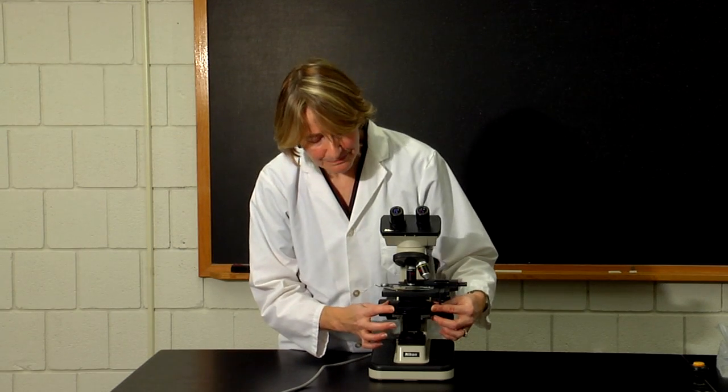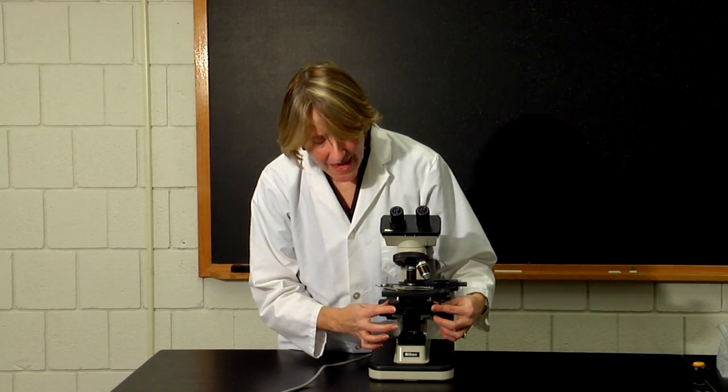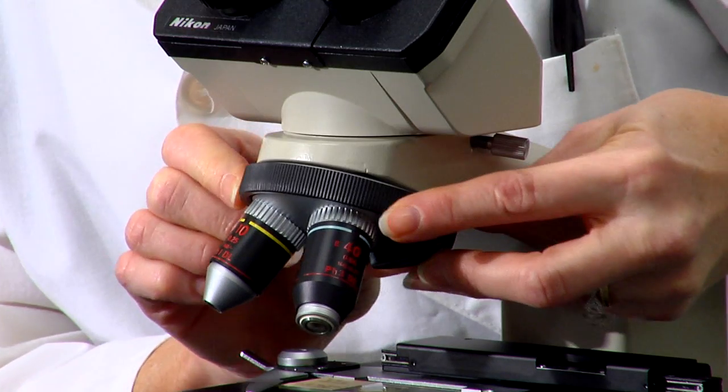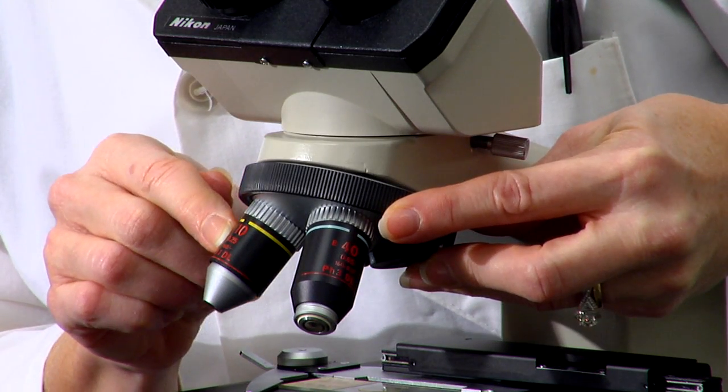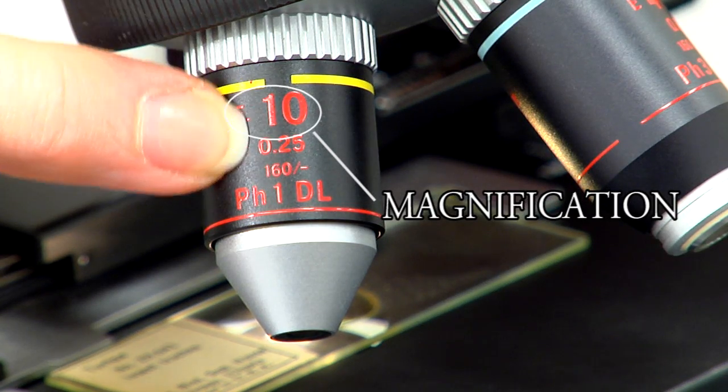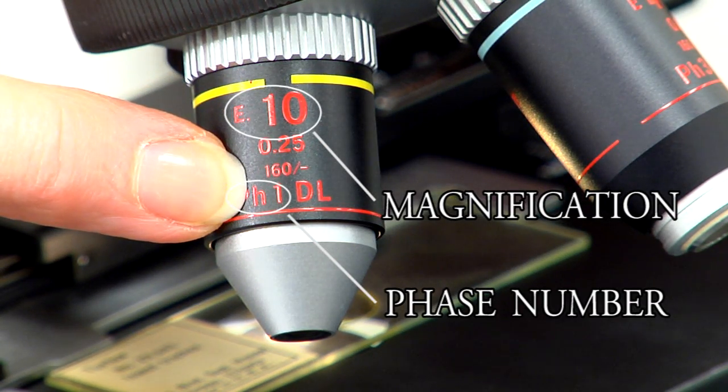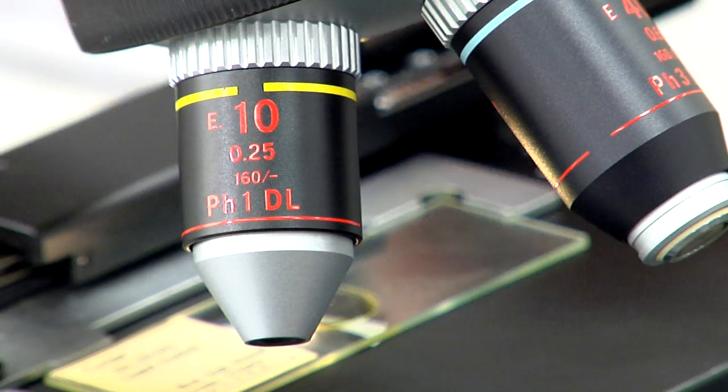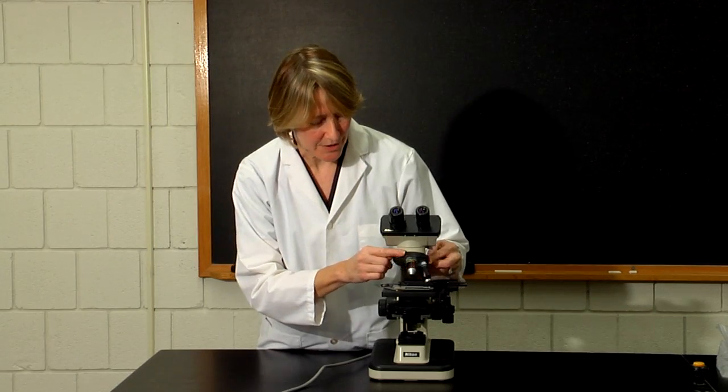For phase contrast, each lens uses a different phase contrast lens system, and you can look at the individual objective lens. Each objective lens will be marked not only with the magnification, but also with a pH number, and this tells you which adjustment to make in the condenser lens system.